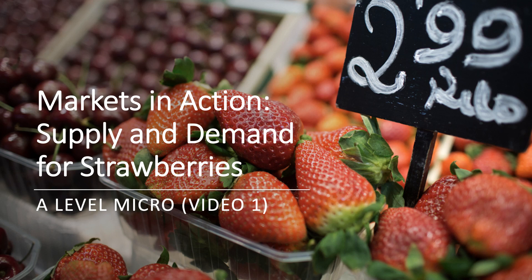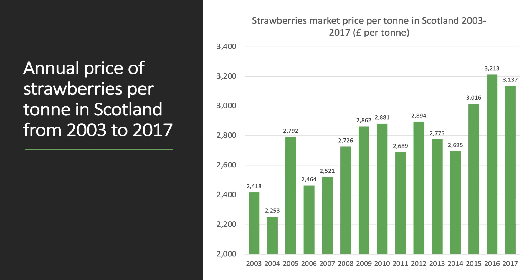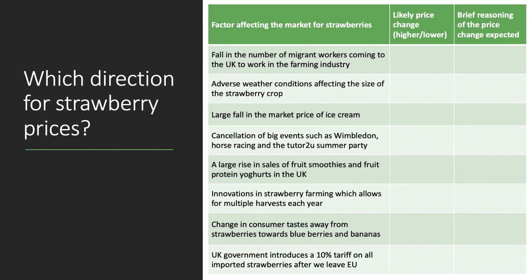Welcome to this series of videos thinking about the price mechanism. We've been introducing market prices, supply and demand theory in class this week. We're going to explore some key factors that might bring about a change in the market price of strawberries. In a free market system, prices are determined by the twin forces of supply and demand. This chart shows the annual average price of strawberries grown and harvested in Scotland from 2003 to 2017 — volatile, but with an upward trend, which is good news for strawberry growers.